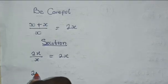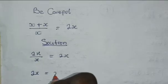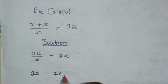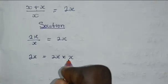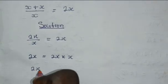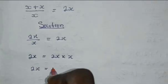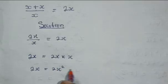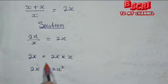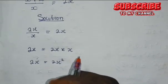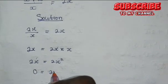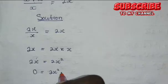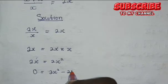Therefore, we are going to have 2x equals 2x multiplied by x. Now, we have 2x equals 2x squared. So, bringing terms to the right-hand side: 0 equals 2x squared minus 2x.